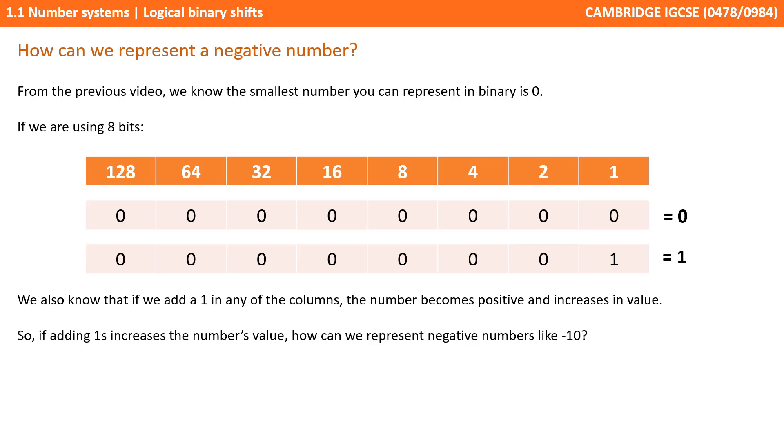So this begs the question: if adding any 1's at all increases the value of a number, how can we possibly represent negative numbers in binary? For example, minus 10.